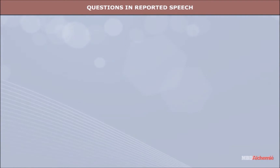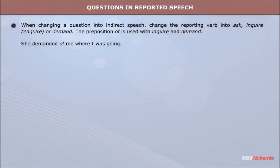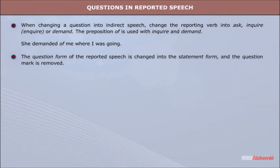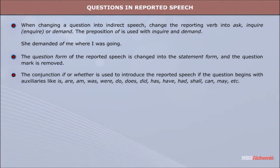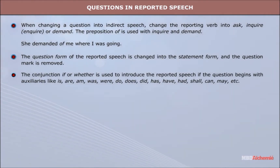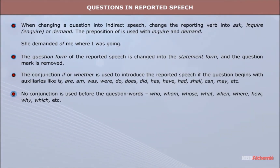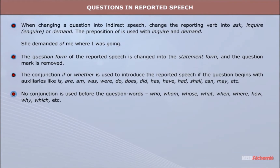Questions in reported speech: When changing a question into indirect speech, change the reporting verb into 'ask,' 'inquire,' or 'demand.' The preposition 'of' is used with 'inquire' and 'demand.' For example: She demanded of me where I was going. The question form of the reported speech is changed into the statement form and the question mark is removed. The conjunction 'if' or 'whether' is used to introduce the reported speech if the question begins with auxiliaries like is, are, am, was, were, do, does, did, has, have, had, shall, can, may, etc. No conjunction is used before the question words who, whom, whose, what, when, where, how, why, which, etc.